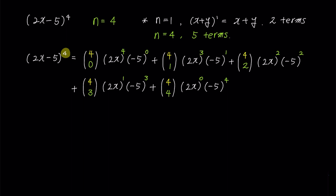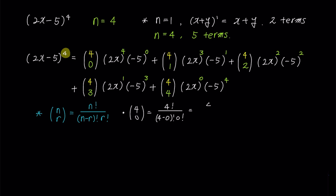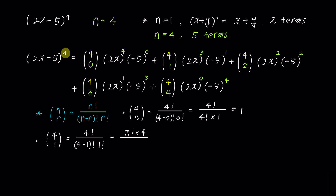Now we are ready to find the coefficient of each term by calculating the combination values. The value of nCr is n factorial over (n minus r) factorial times r factorial. So the first coefficient 4C0 becomes 4 factorial over (4 minus 0) factorial times 0 factorial. Since 0 factorial is 1, the value becomes 1. The second coefficient 4C1 can be written as 4 factorial over (4 minus 1) factorial times 1 factorial. If we express the numerator 4 factorial as 3 factorial times 4, the common factor of 3 factorial cancels out and the answer becomes 4.